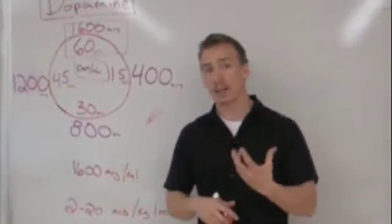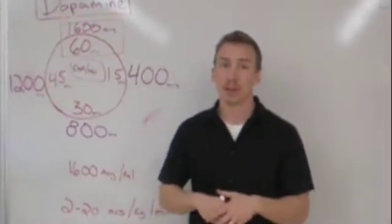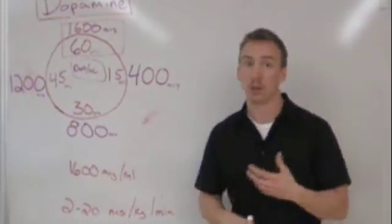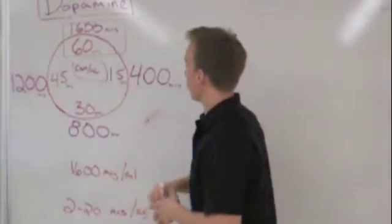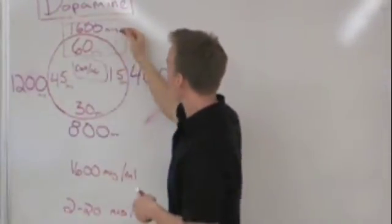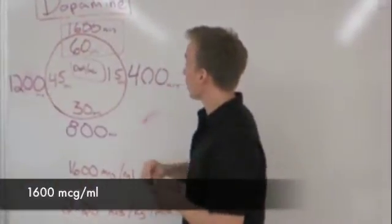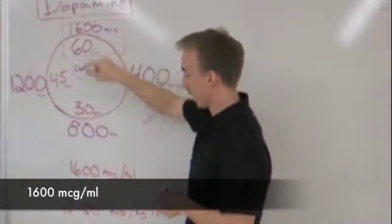A quick and easy way to set up a dopamine drip in the field is to reference what we call the dopamine wheel or the dopamine clock. We draw a circle and at intervals around the clock, we pace out our concentration of drug per milliliter.